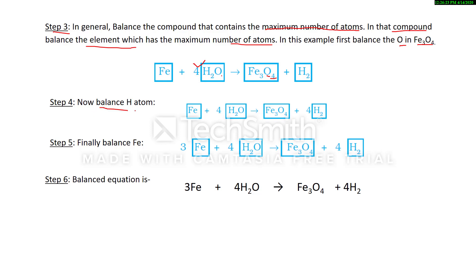Now balance the hydrogen. As soon as we put 4 before H₂O, hydrogen on the reactant side becomes 4 multiplied by 2 = 8. So we write 4 before H₂ on the product side, giving 4 × 2 = 8 hydrogen atoms. Finally we balance iron. Fe₃ has 3 iron atoms on the product side, so we write 3 before Fe on the reactant side to make 3 iron atoms there.